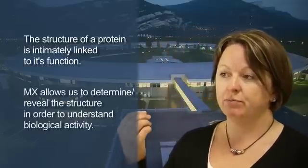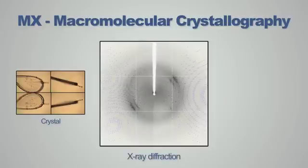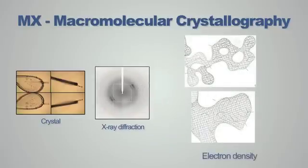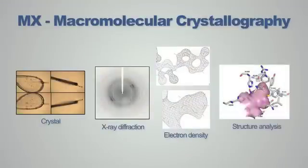The technique we use is macromolecular crystallography, and by this technique we hope to reveal the structure of a protein, and therefore understand its biological activity. First, we need to crystallise the protein. Once we have crystals, we can carry out a diffraction experiment using x-rays. Then we can calculate an electron density map using phases, either calculated or determined experimentally. And once we have an electron density map, we interpret that to give us a detailed atomic model of a protein, or other macromolecules such as DNAs.